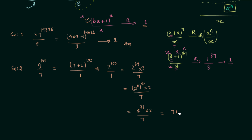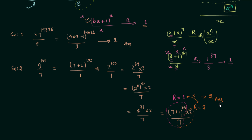Now I can write 8 as 7 + 1, which is the required form. So we have (7 + 1) raised to power 33, multiplied by 2, divided by 7. We now have two parts: (7 + 1)^33 divided by 7 produces remainder 1, and 2 divided by 7 produces remainder 2. Since the two terms are multiplied, we multiply the remainders: 1 × 2 = 2. So 2 is the answer.